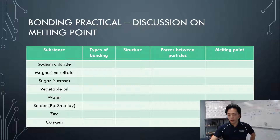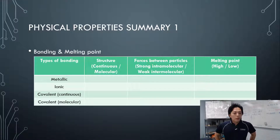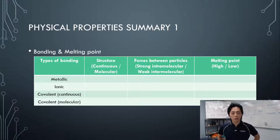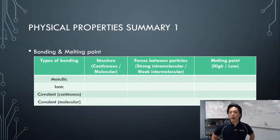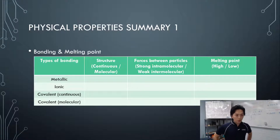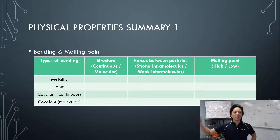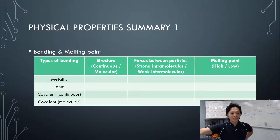Moving on to the summary table. For metallic bonding: structure is continuous, forces between particles are strong intramolecular, so melting point is high. For ionic bonding: also continuous — ionic lattice — forces are strong intramolecular, melting point is high. Sugar is not ionic at all, it's covalent.